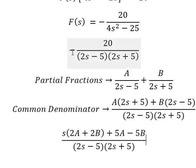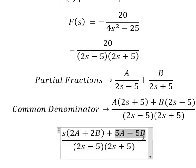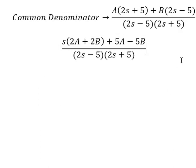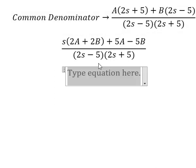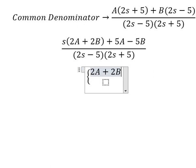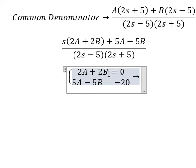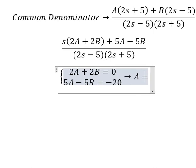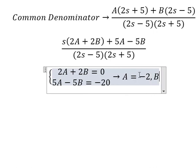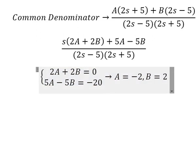We see that the constant gives us 5A minus 5B equals negative 20. Since there is no s term on the right side, 2A plus 2B equals zero. Now we set up the system of equations and solve: A equals negative 2, B equals 2. We substitute A and B back in.